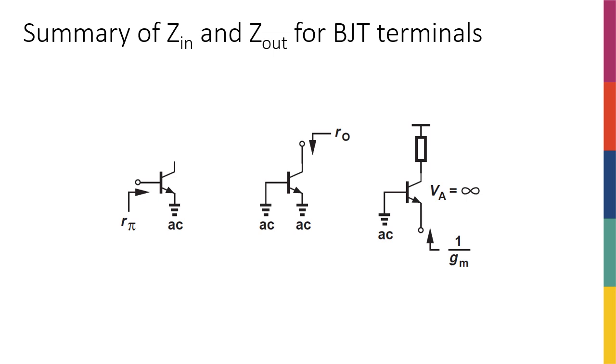Just to make sure everything was clear, I summarized everything we discussed about resistances. Looking into the base, I see Rpi. Looking into the collector, I see R0. And looking into the emitter, assuming no early effect, I see 1 over GM.